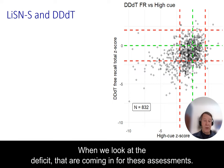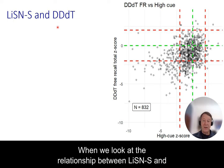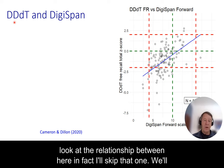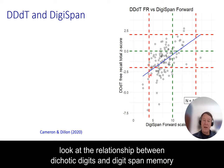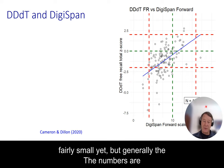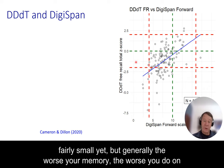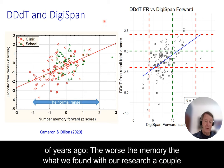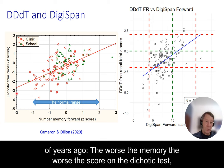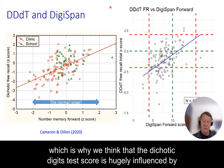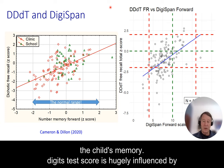Looking at the relationship between dichotic digits and DigiSpan memory, we see quite a strong relationship: the worse your memory, the worse you do on the dichotic test. The numbers are fairly small yet, but this echoes what we found in our research a couple of years ago — the worse the memory, the worse the score on the dichotic test. That is why we think the dichotic digit test score is hugely influenced by the child's memory ability.